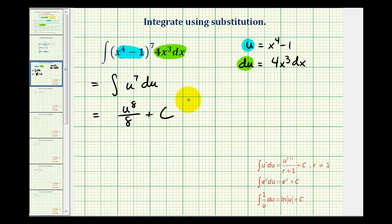And the last step is to rewrite this in terms of x. Since u is equal to x to the fourth minus one, we'll have one eighth times the quantity x to the fourth minus one raised to the eighth plus c. So here is our antiderivative in terms of x by using the technique of substitution.